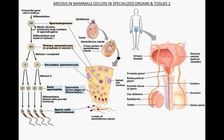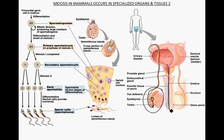In males, meiosis also happens in specialized organs and tissues — the testes. Within the testis, sperm are produced via meiosis, then mature in the epididymis gaining motility. During ejaculation, sperm move up the vas deferens and are ejaculated through the urethra. To focus on the meiotic part, we take a cross-section through one of the seminiferous tubules within the testis.